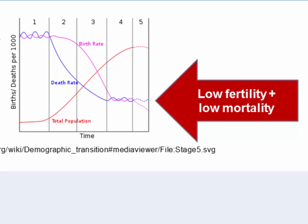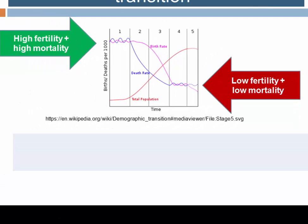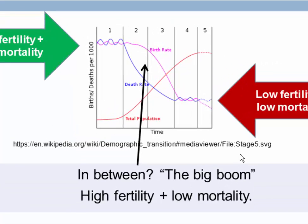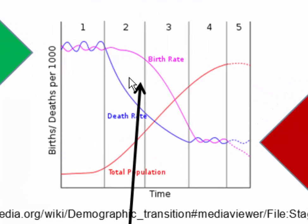The great slowdown is marked by a period of low fertility and low mortality. Although mortality rates are low, low fertility rates mean population growth is also slow or negative. In between these two regimes comes the big boom — a period of high fertility and low mortality — and that bulge between the birth rate and the death rate took the human population from 1 billion to 8 billion people in 200 years.